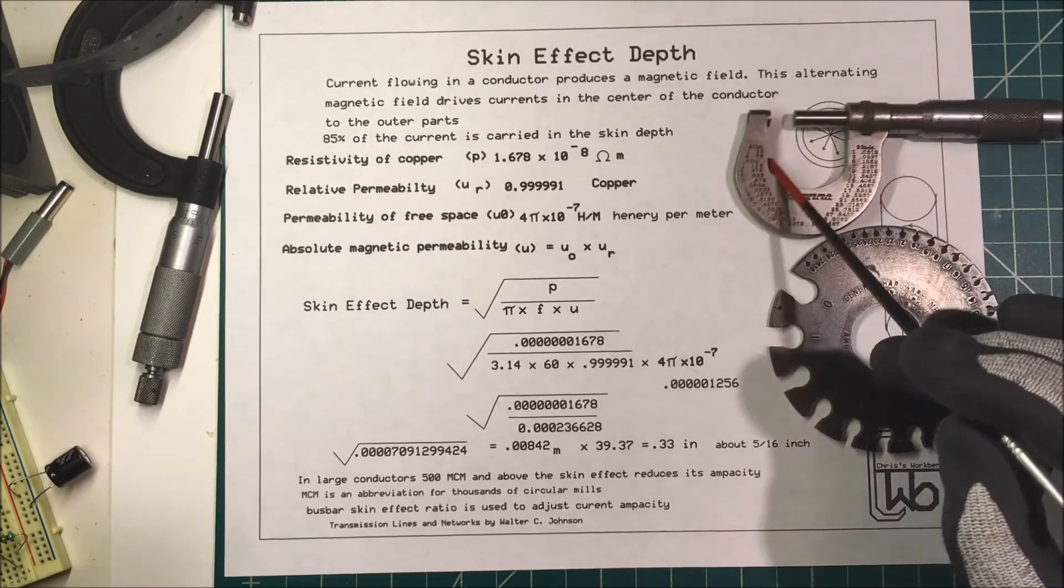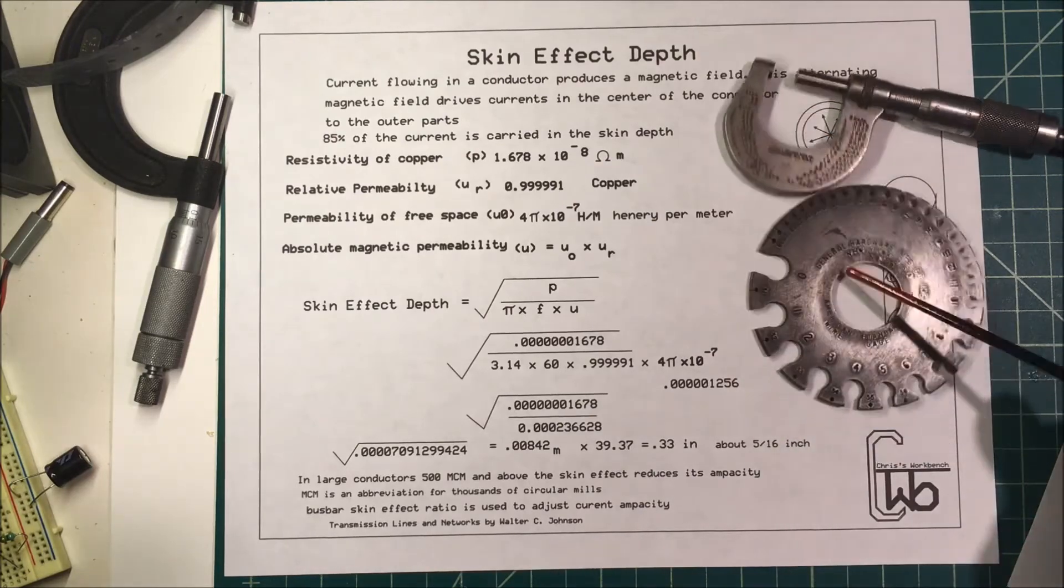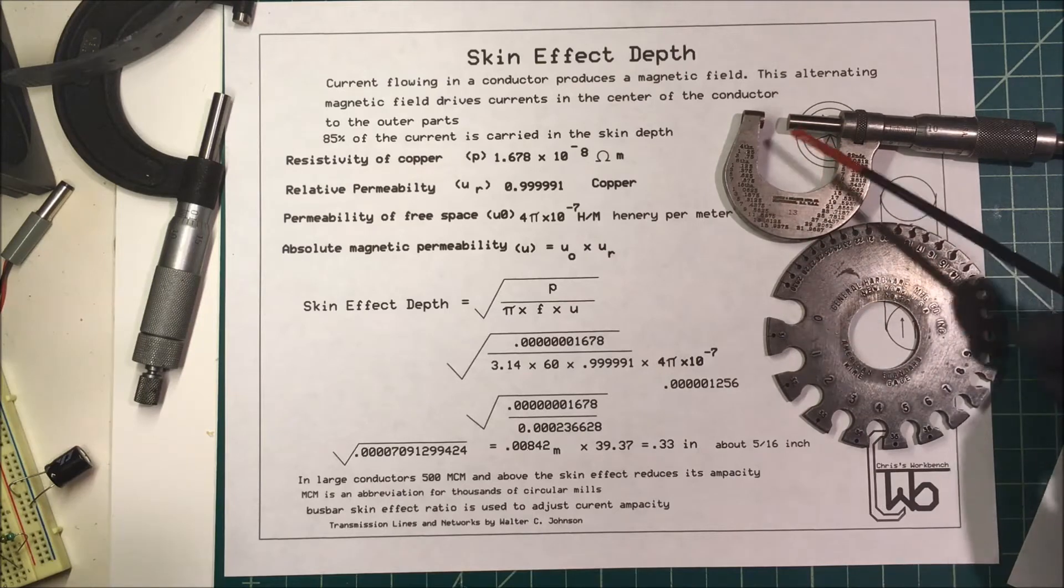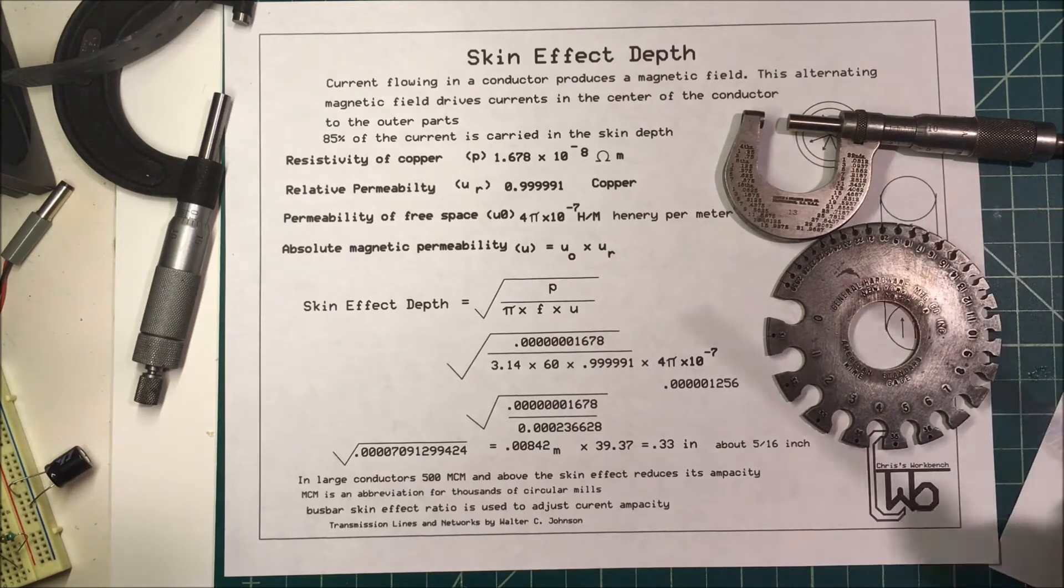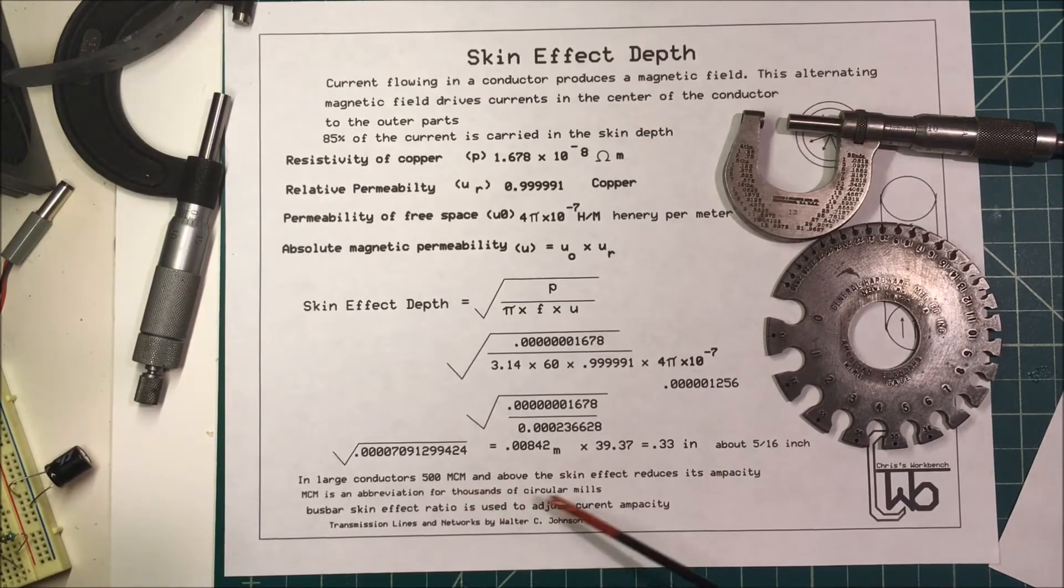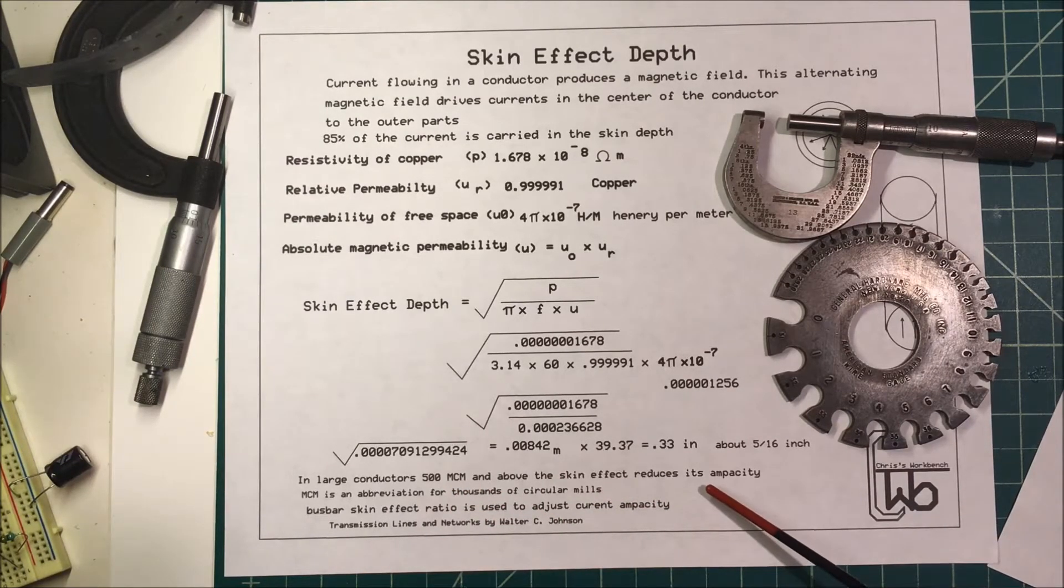Here it is on my mic, about this distance here. If we have a wire with a radius smaller than that, then the skin depth won't be a problem. But in larger conductors, say 500 MCM and above, the skin effect will reduce its ampacity.